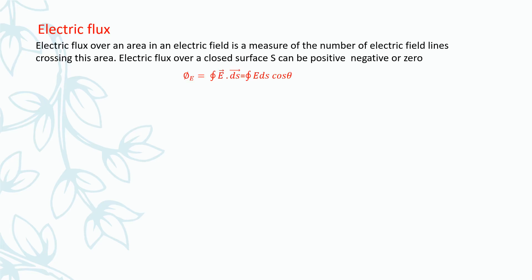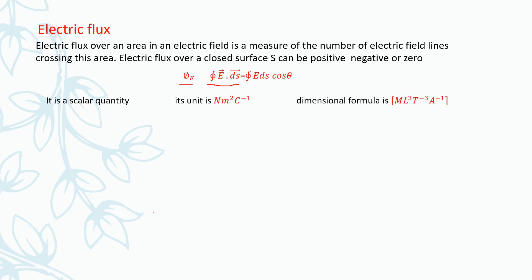Electric flux is equal to the closed integral of the dot product of electric field and area element: φE = ∮ E · dS cosθ. It is a scalar quantity and its unit is Newton metre squared per Coulomb (N·m²·C⁻¹), and the dimensional formula is ML³T⁻³A⁻¹.